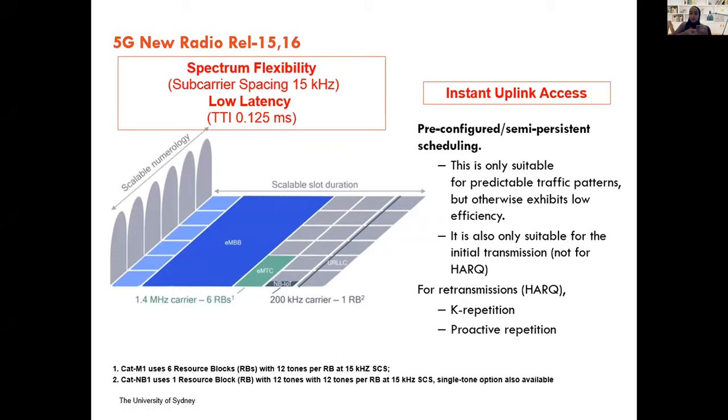The transmission time interval has been divided down from one millisecond to a quarter called mini slots at 0.125 milliseconds, so we can have faster communication, particularly for packets that are small. There also have been some efforts in terms of establishing pre-configured or semi-persistent scheduling to completely eliminate or eliminate most of the signaling overhead.